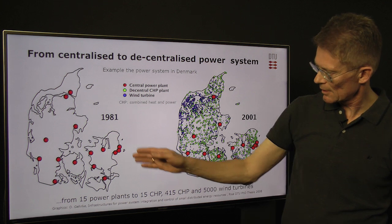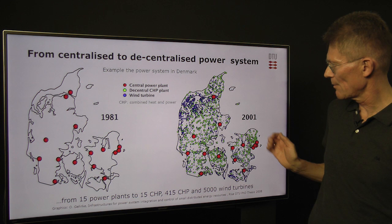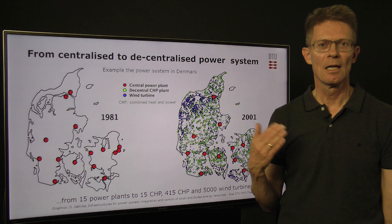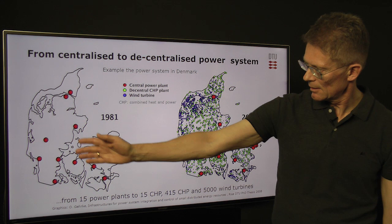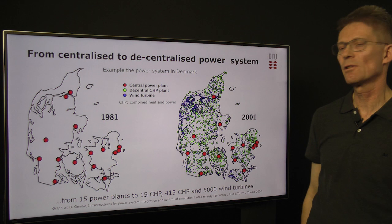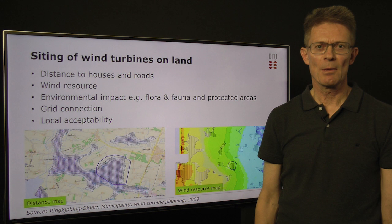We have transformed our energy system from a centralized power system to a decentralized power system. In the 1980s, we had 15 centralized power plants spread over the country — those are the red dots. Today we still have 15 power plants, but they have been converted to combined heat and power plants, producing both electricity and heat. On top of that, we have installed 415 decentralized combined heat and power plants — the green dots — and the blue ones are the wind turbines spread all over the country.